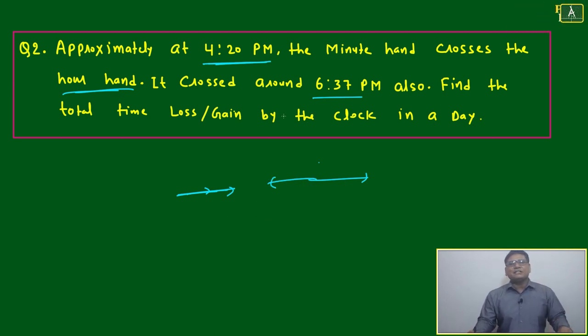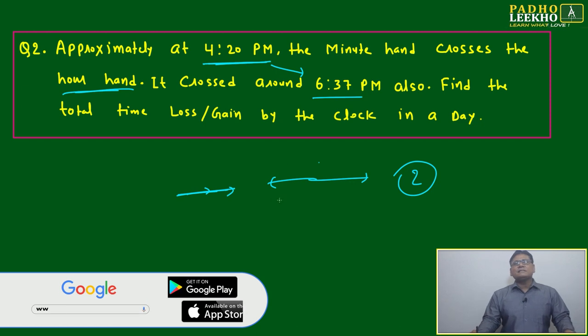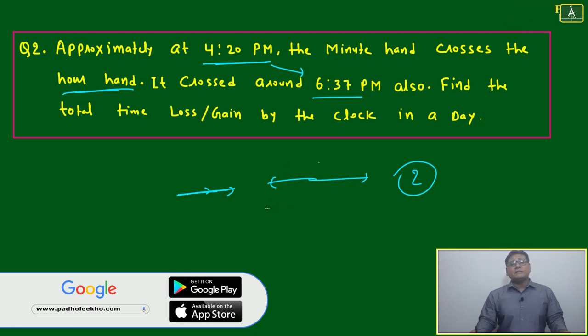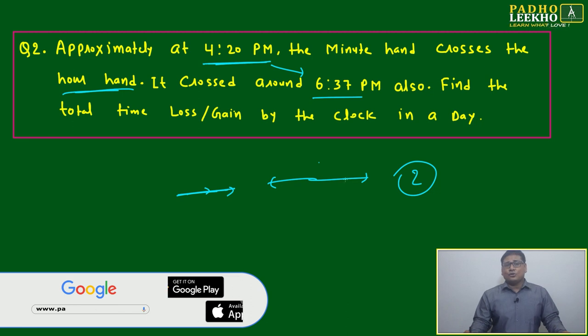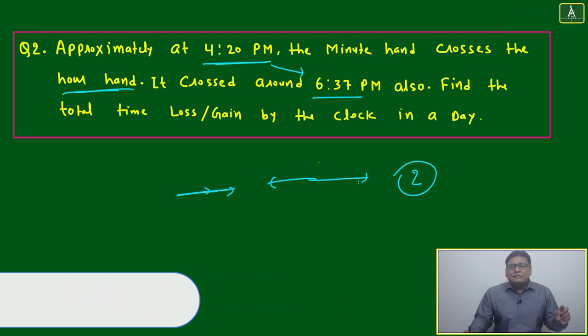But your question is crossing each other, meaning making zero. Two times are given: 4:20 PM and 6:37 PM. During these two times, how many times should they cross? Two times, because the time difference is more than two hours, so they will cross two times.